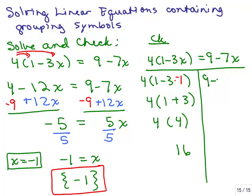Now let's do the right-hand side: 9 minus 7 times negative 1. You need to do order of operations, so you do 7 times negative 1 first — you don't do 9 minus 7. So I have minus 7 times negative 1, that'll be plus 7, which is 16. I got the same number on both sides, so I did this problem correctly.